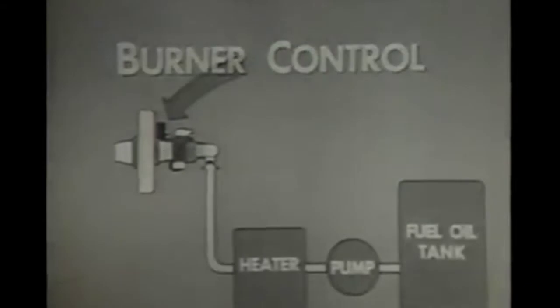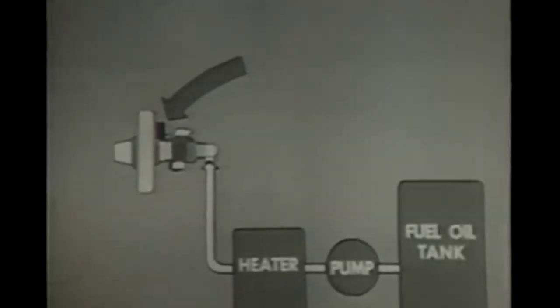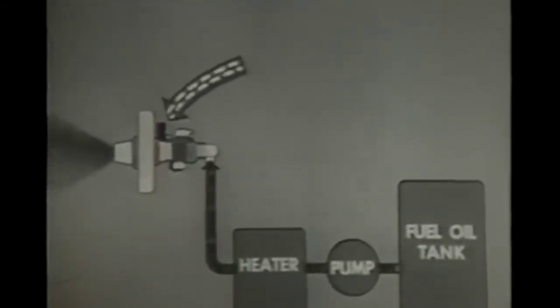Additional air needed for proper combustion enters through an air door in the furnace wall. As in all burners, you control the firing rate by controlling the amount of fuel oil and air going to the burner.